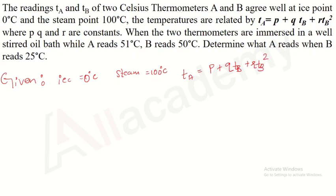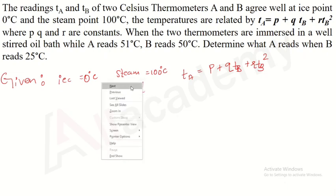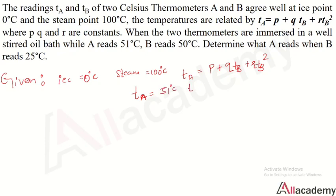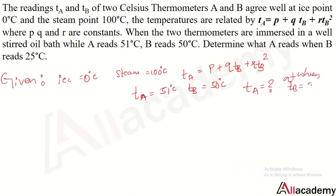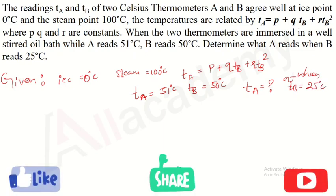The ice point is 0°C and the steam point is 100°C. When thermometers are dipped in the oil bath, ta reads 51°C and tb reads 50°C. We need to identify ta when tb shows 25°C. Let us substitute the ice point and steam point values into equation 1.